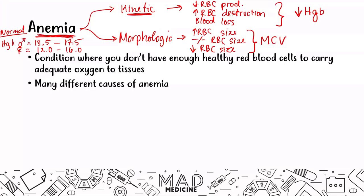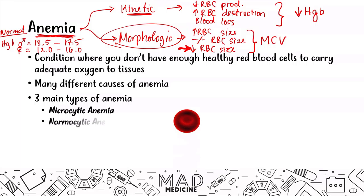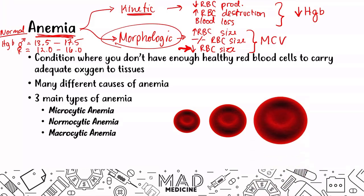In our lecture today and in the rest of our videos we're going to be basing off the morphologic approach. There are three main types: you have microcytic anemia where you have a decreased red blood cell size, you have normocytic anemia which is a normal red blood cell size, and then you have macrocytic anemia which involves a very large red blood cell.